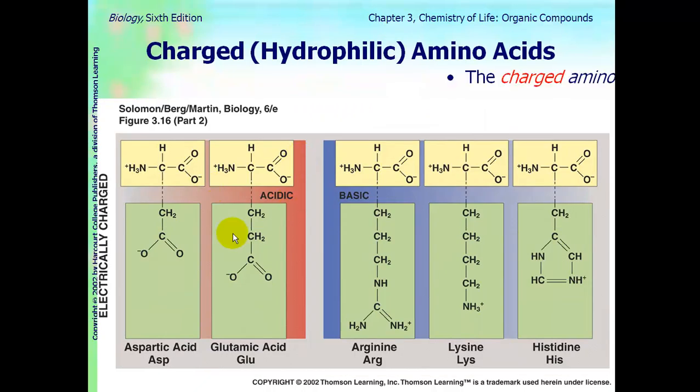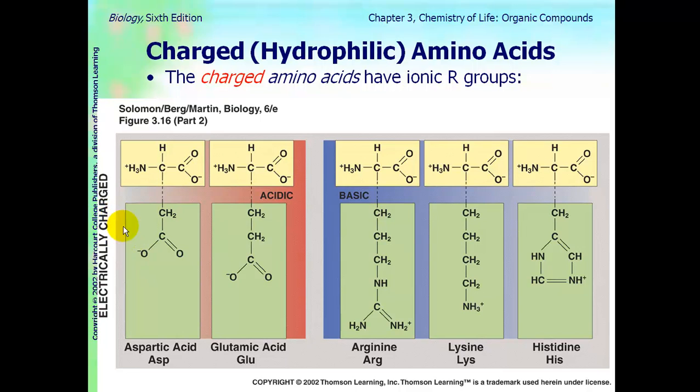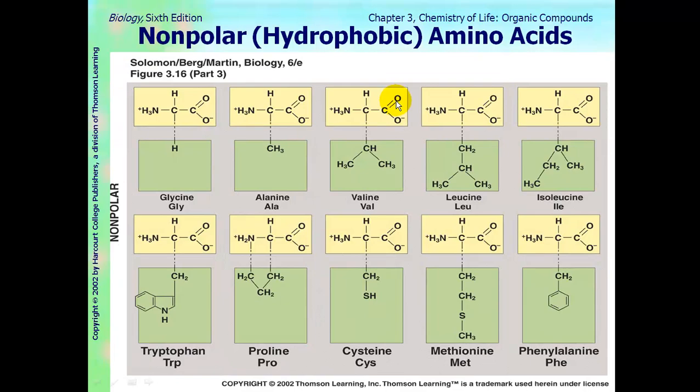The polar amino acids are going to be hydrophilic. Here are ones that are charged, electrically charged amino acids, and that's because they have ions. They're charged, electrically charged. Here's these ions here for their R groups.